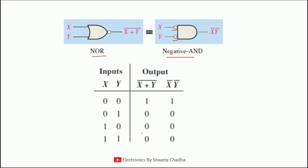So here you will get x bar dot y bar. First is x plus y whole bar. This is the NOR gate which is opposite to the OR gate. The truth table of OR gate is 0, 1, 1, 1. But the truth table of NOR gate will be reversed, that is 1, 0, 0, 0. And here you will get x bar dot y bar. x bar is 1, 1, 0, 0 and y bar is 1, 0, 1, 0. There is a dot in between both, meaning product. So 1 dot 1 = 1, 1 dot 0 = 0, 0 dot 1 = 0, and 0 dot 0 = 0. Hence we have verified this expression with the help of a truth table.